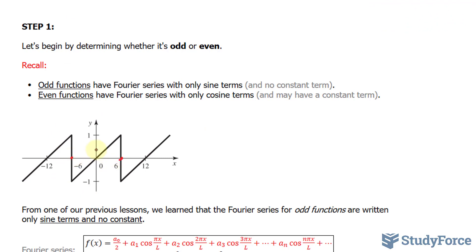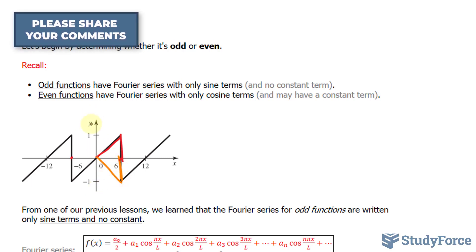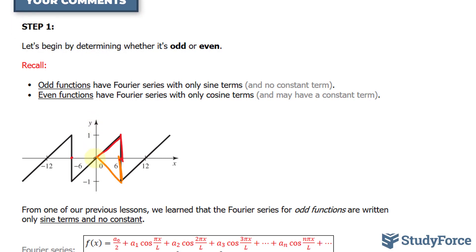It starts here and it ends here. And let's just take half of this wave. If I were to reflect half of this wave about the x-axis, it would look like this. And if I were to reflect it about the y, it would superimpose this part. This suggests that our waveform is odd. And as mentioned earlier, when your function is odd, you have a Fourier series with only sine terms and no constant term.